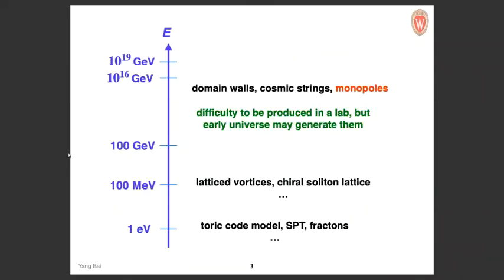I've learned a lot from this workshop, which is the reason I attended — most participants I had never met before. I saw that there are lots of interesting things happening at what I call the eV scale, meaning atomic physics and solid state physics, and also something interesting at the QCD scale — several talks related to neutron stars, and some interesting topological states at that scale. But there are still higher energy scale physics to consider.